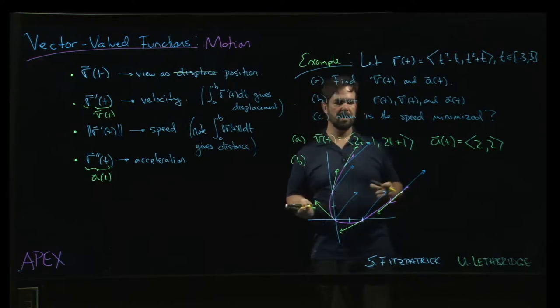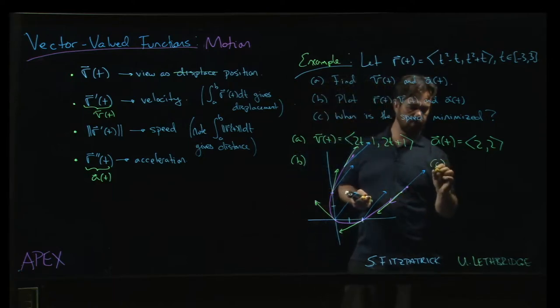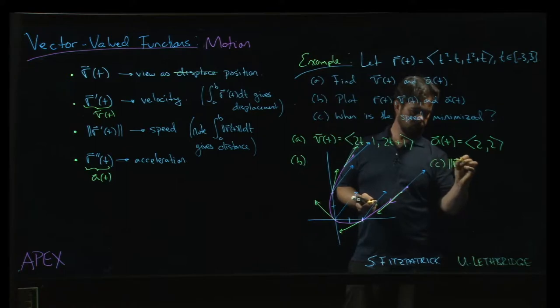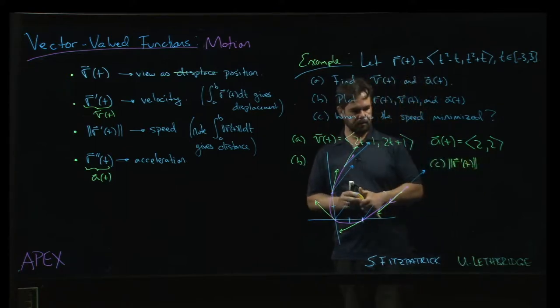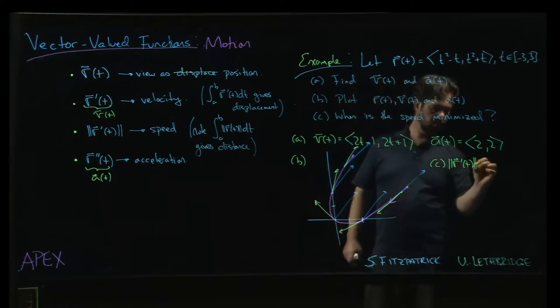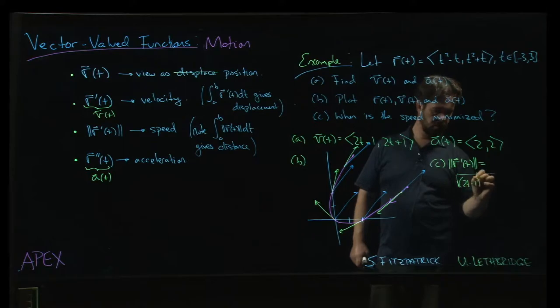All right. And finally, the speed. When is the speed minimized? Well, the magnitude of r prime is going to be the square root of 2t minus 1 squared, 2t plus 1 squared.